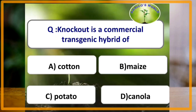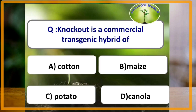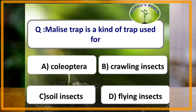Knockout is a commercial transgenic hybrid of which of the following crops? The answer is maize. Malaise trap is a kind of trap used for which of the following type of insects? The answer is flying insects.